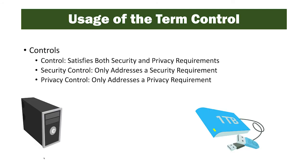Regarding usage of the term 'controls' in revision two of the RMF: we have two types of controls now. A control satisfies both the security and privacy requirements — we can use the term 'control' when the safeguard covers both information security and privacy. On the other hand, a security control only addresses a security requirement, and a privacy control only addresses a privacy requirement. So it can be touchy when we talk about controls — we want to make sure we use the right term.